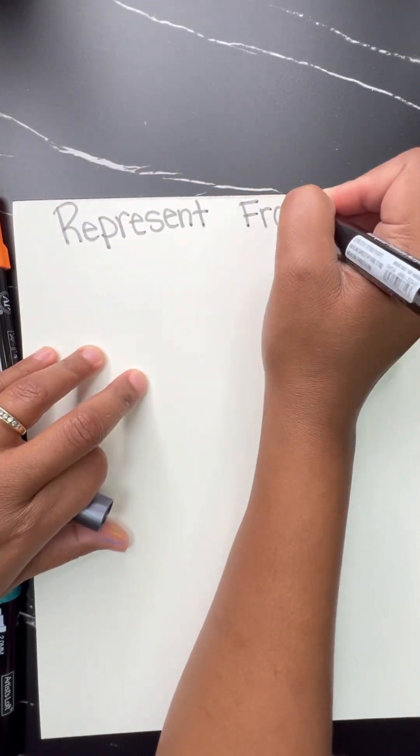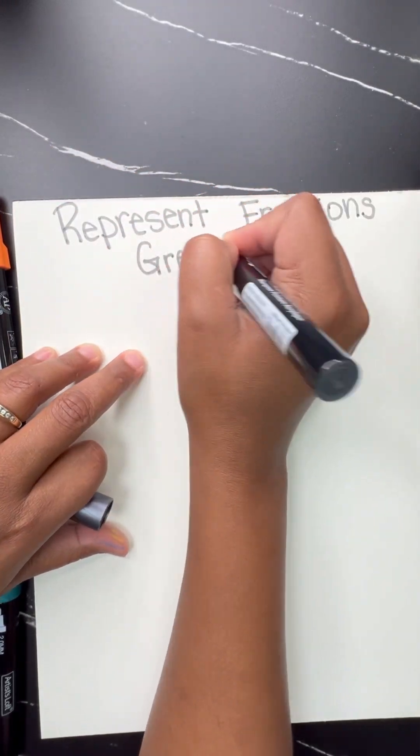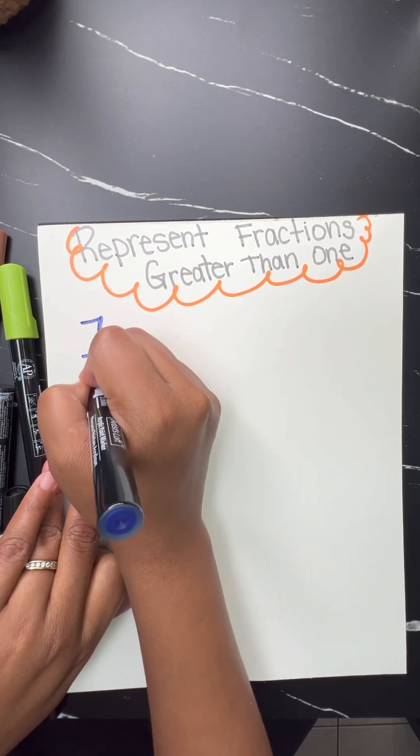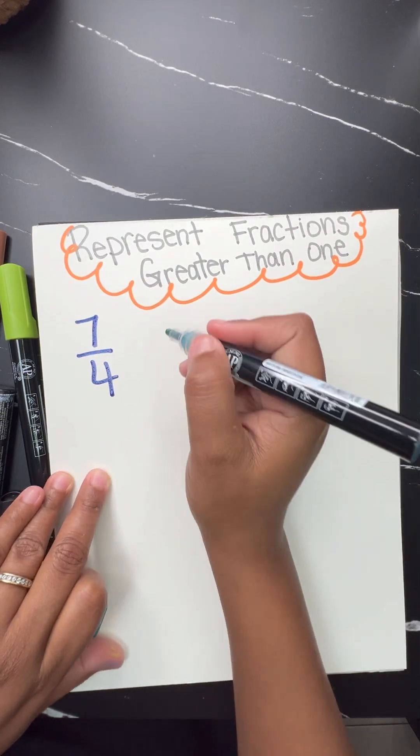Let's talk about how we represent fractions greater than one. So if we take a look at the fraction 7 fourths,